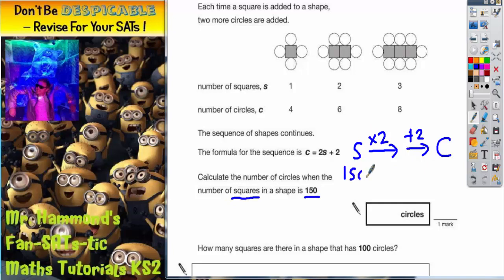So we stick 150 in at this end of the number machine. Times by two is going to give us 300, and then add two is going to give us 302. So double 150 is 300, add two is 302, so there would be 302 circles.